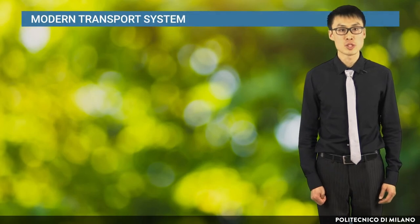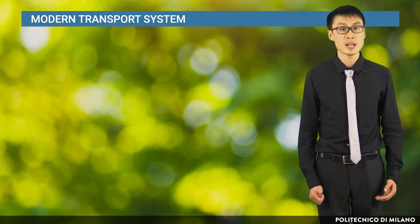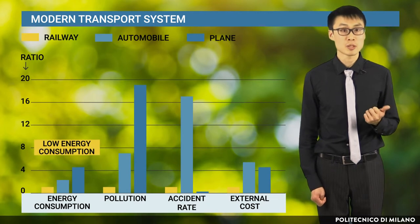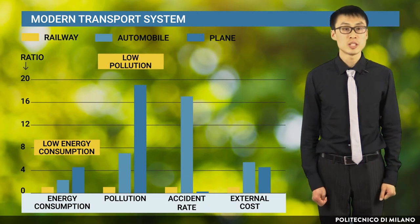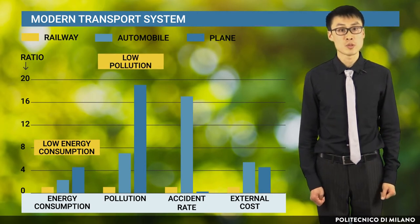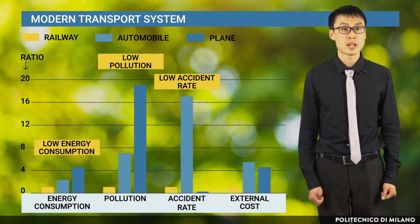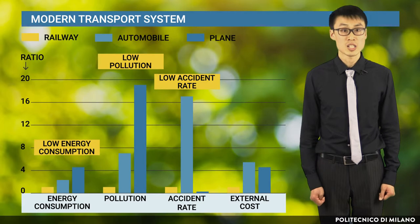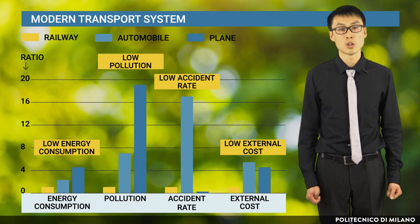We have many options in the modern transport system. The advantages of railways compared to other means of transport, such as automobile and plane, are mainly: First, low energy consumption, about one-third compared to automobile. Second, low pollution, nearly 15% of automobile pollution and only 5% of the plane. Third, low accident rate, approximately 6% compared to automobile, where the lowest one is the plane, of course. Last, low external cost, which is around 20% compared to automobile and the plane.